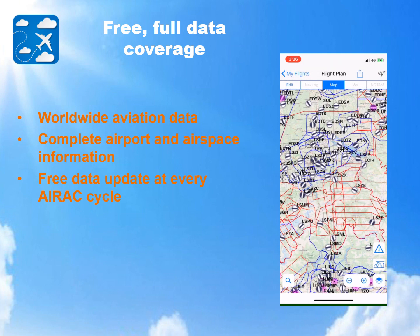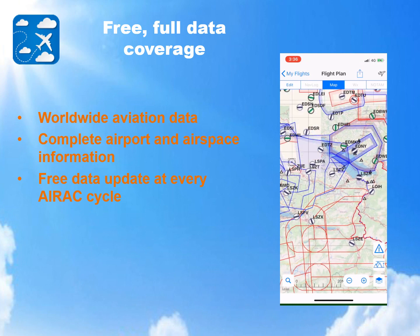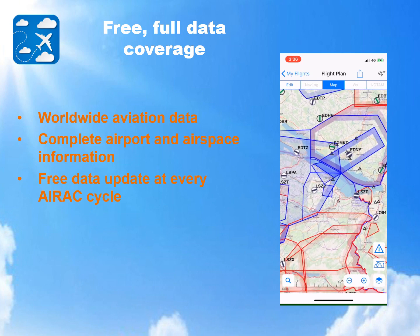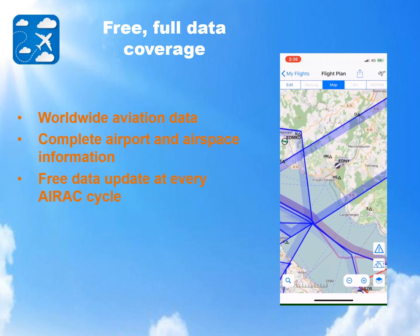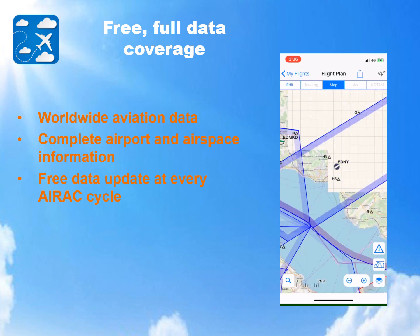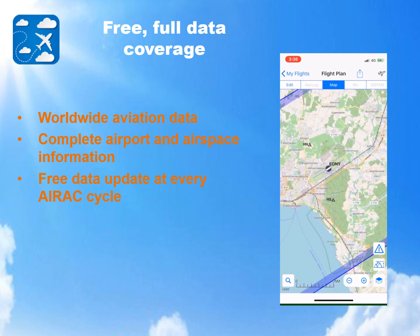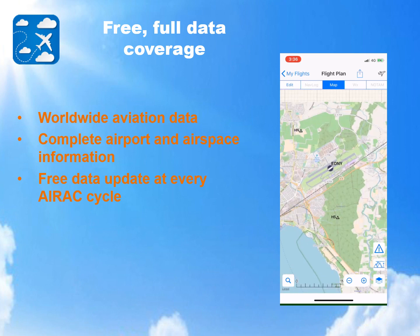When you select a flight, an aviation map is displayed. It is centered on your home airport, or on your country if you have not defined your home airport. You could zoom in to view more details — for example, if you zoom in, VFR waypoints will appear.